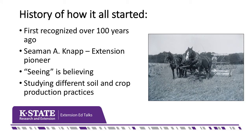So how did all this get started? It started a little over a hundred years ago by a gentleman by the name of Seaman Knapp. He was one of our Extension pioneers. He felt like if farmers were going to buy into what experiment stations and Extension agents were starting to do, that seeing is believing — they needed to be able to see the actual results, the studies, the on-farm demonstrations actually on farmers' fields. That's how one of the three legs of the stool of how Extension got started is doing these on-farm trials with farmers, studying different types of soil conditions and crop production practices.